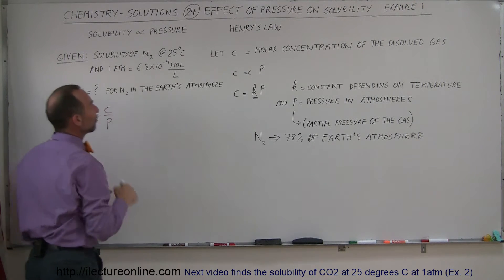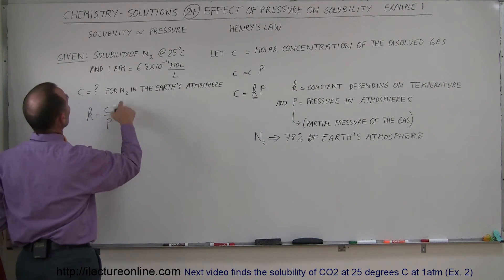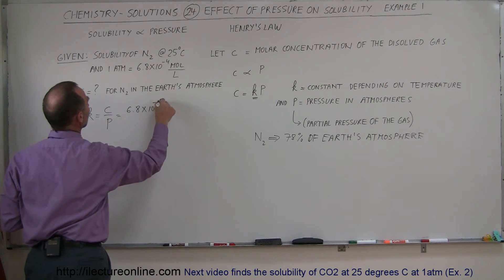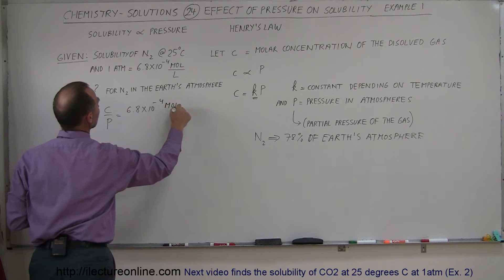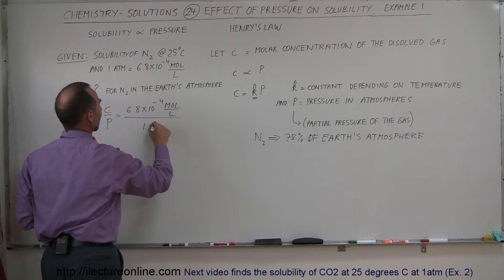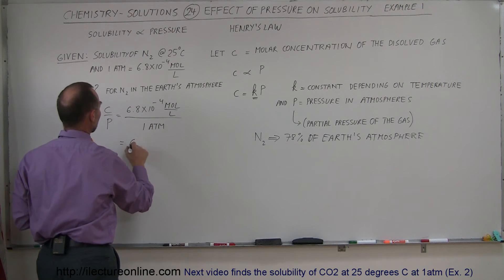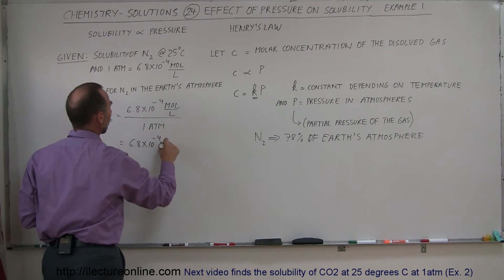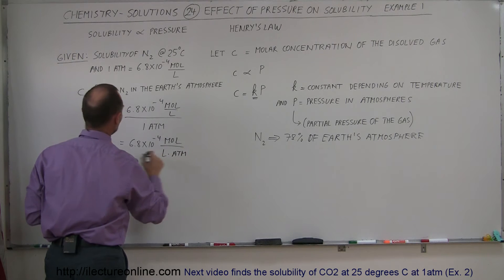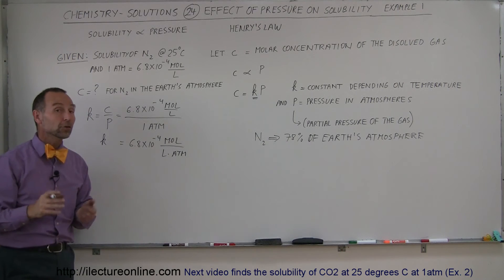C is defined as the molar concentration of the dissolved gas. So in this case, C is the number they gave here, which is 6.8 times 10 to the minus 4 moles per liter. And the pressure under which this occurs is equal to 1 atmosphere. And so that would be K. So K would therefore be equal to 6.8 times 10 to the minus 4 moles per liter times atmosphere. And so that's the constant associated with nitrogen gas under those conditions.